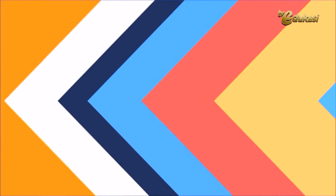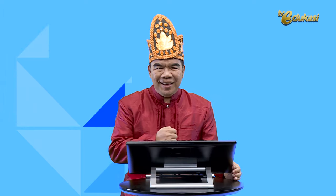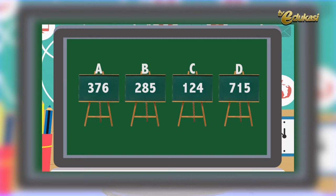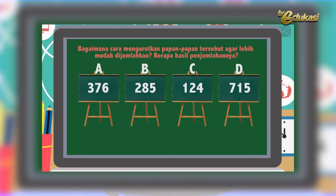Ingat, belajar matematika bersama Pariduan membuat matematika menjadi lebih mudah. Baik anak-anak, Bapak akan memberikan soal tentang sifat komutatif dalam bentuk HOTS atau Higher Order Thinking Skill atau berpikir tingkat tinggi. Perhatikan soal berikut ini. A, B, C, dan D adalah empat papan yang bertuliskan bilangan-bilangan, berturut-turut 376, 285, 124, dan 715. Yusuf akan menjumlahkan bilangan-bilangan tersebut. Bagaimana cara mengurutkan papan-papan tersebut agar lebih mudah dijumlahkan? Berapa hasil penjumlahannya?